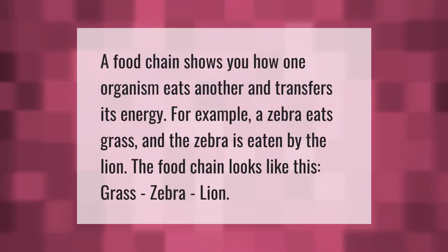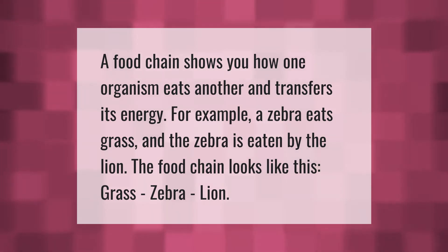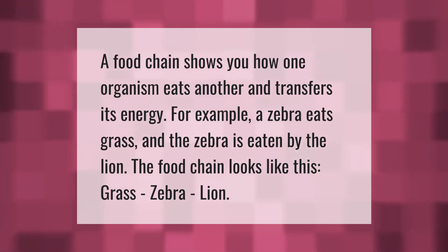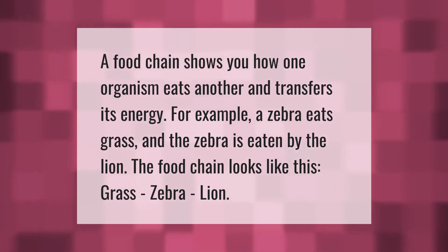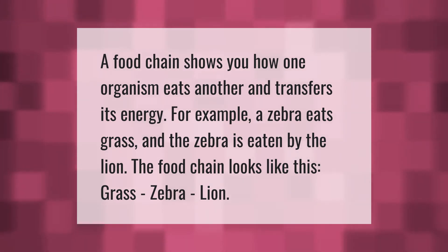A food chain shows how one organism eats another and transfers its energy. For example, a zebra eats grass and the zebra is eaten by the lion. The food chain looks like this: grass → zebra → lion.